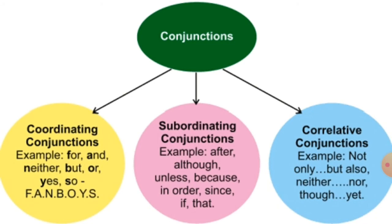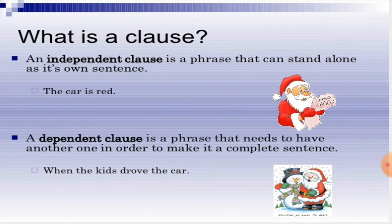Now let us look into the different types of conjunctions. There are three types of conjunctions. The first one is coordinating conjunction, which uses the acronym FANBOYS. The second one is subordinating conjunction. And the third one is correlative conjunctions. In this video we are going to study coordinating and subordinating conjunctions.